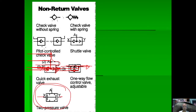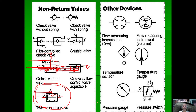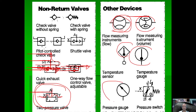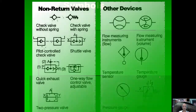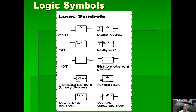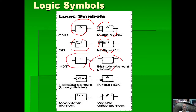We have flow measuring instruments: volume meter, flow meter, temperature sensor, temperature gauge, pressure gauge, and pressure switch. For logic symbols — AND, multiple-AND, multiple-OR, OR, NOT, bi-stable element general, bi-stable element, inhibition, monostable element, and variable delay element — these will be discussed in your automation subject.